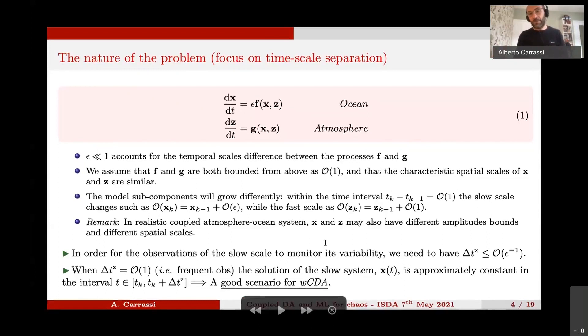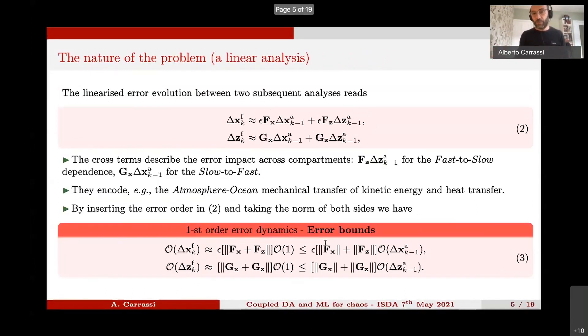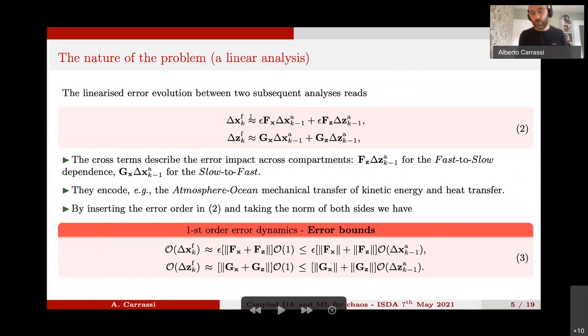If you take an interval of order one, the slow scale will change less than how much the fast scale will grow. So, it is clear already in this setting that we see that in order for the observation of the slow scale to monitor the variability of the slow scale, we need to have the interval between observation to be bounded from above by this quantity here. The opposite situation is when we have very frequent observations. So, we assume to have observation of the fast variable to be of the order, the interval, of order one. This is a new situation in which the slow system will be seen as approximately constant in that interval. And this is a good scenario to applying weakly coupled data assimilation.